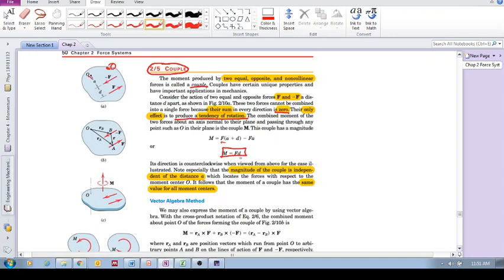this moment becomes independent of the point that you take moments about. Because this FA minus FA cancels, and all that's left is the magnitude of one of the forces times the perpendicular distance. So the magnitude of the couple is independent of the distance A. Wherever you take it about, it's independent.